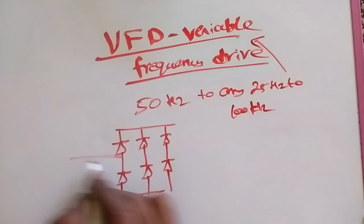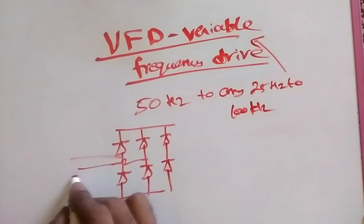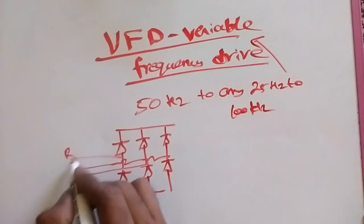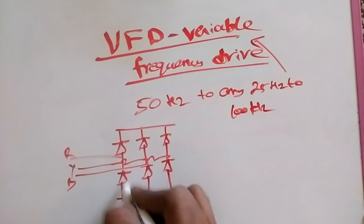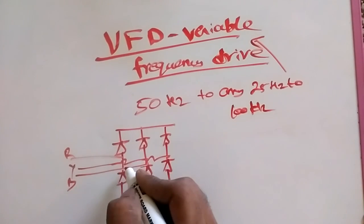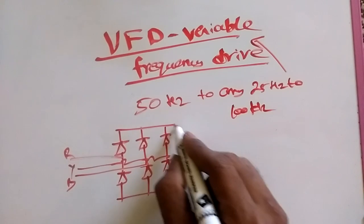We take three phase supply, in the three phase supply R, Y, B. The diodes are working in reverse and forward method to change the voltage from AC to DC.